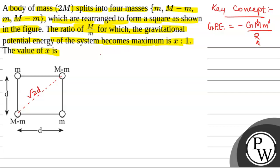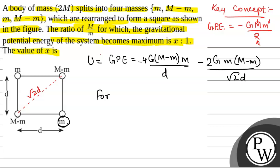So, we will have gravitational potential energy of this system equal to, first, -G(M-m)(m)/d - this will be four times - and again, -G(m)(M-m)/(√2d) - this will be two times. So, this is U, this is the gravitational potential of the system.